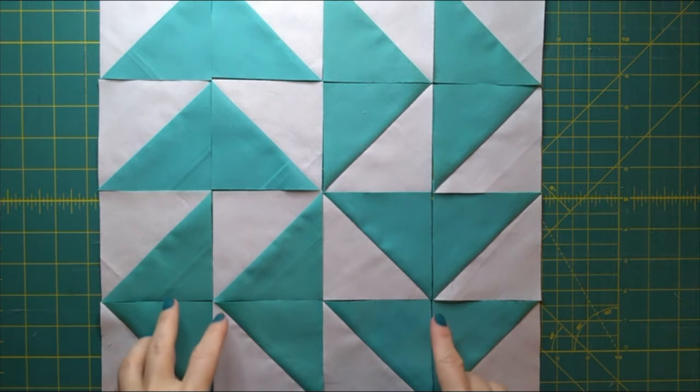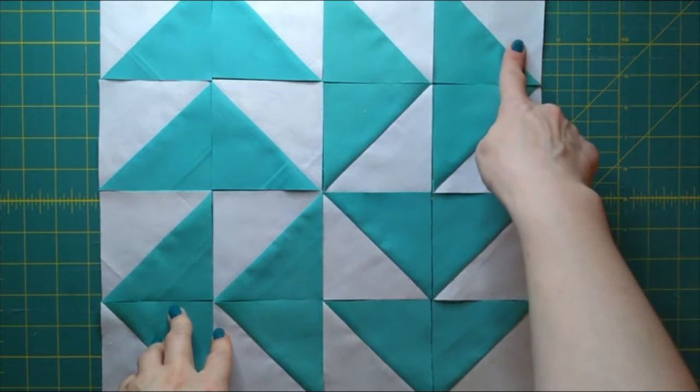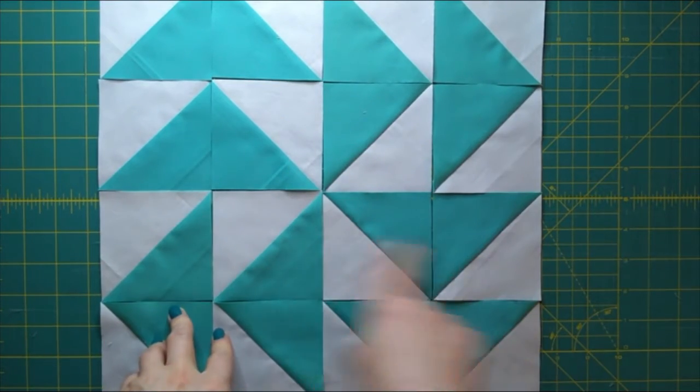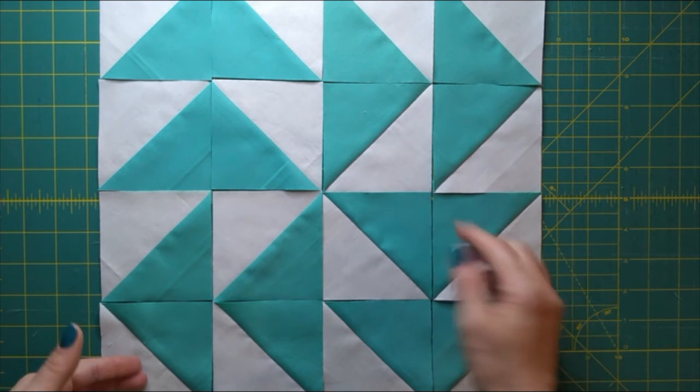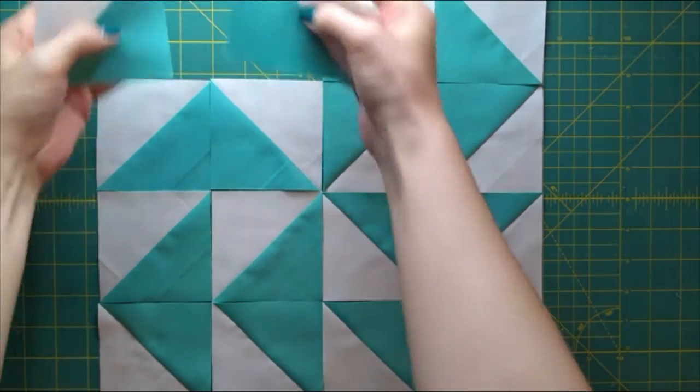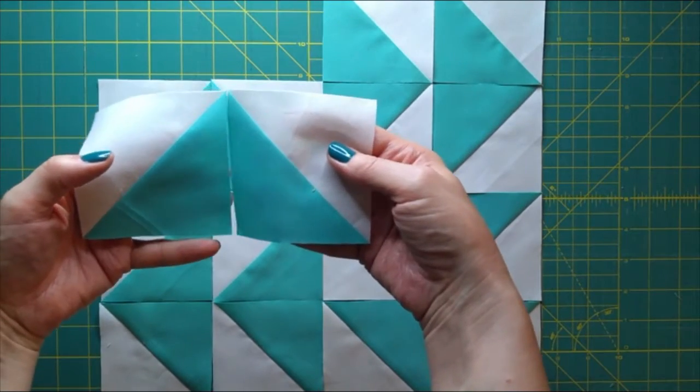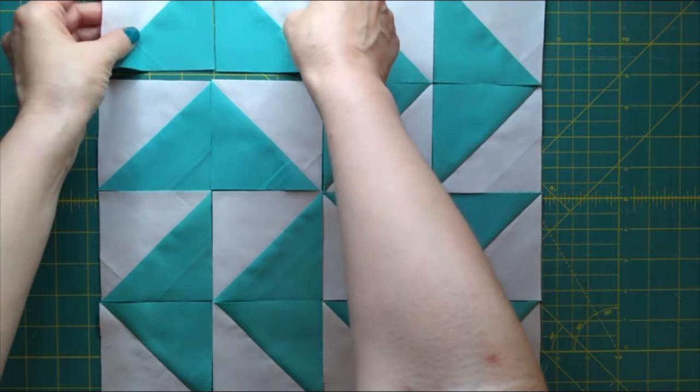Now you can assemble this the traditional way if you'd like by piecing each row one at a time together and then attaching your rows together, which is the way we did last week's block. But I mentioned last week that I'm going to do this one a little bit differently. I'm actually going to piece each pair of half square triangles together to be a flying geese unit first.